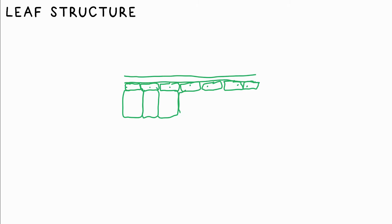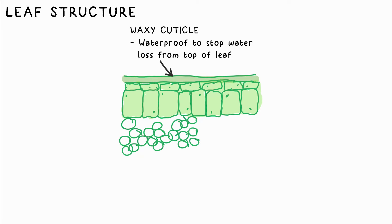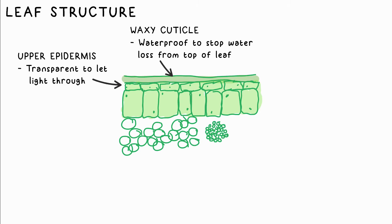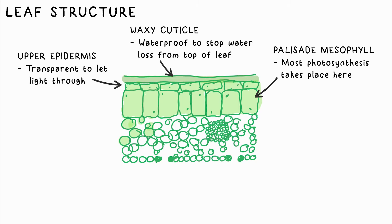At the top we have the waterproof waxy cuticle — not to stop water from entering the leaf, but to stop it from evaporating from the top and causing the leaf to dry out. The upper epidermis (epidermis means outer layer) consists of transparent cells that allow light to pass through to the palisade mesophyll layer. Mesophyll means a layer in the middle, and these cells are chock full of chloroplasts.